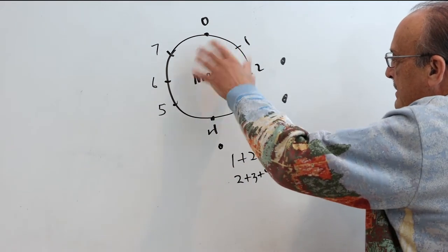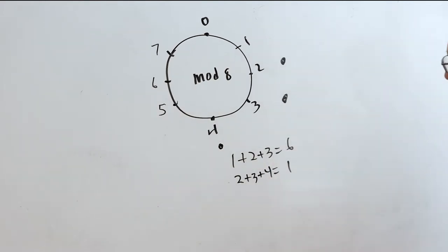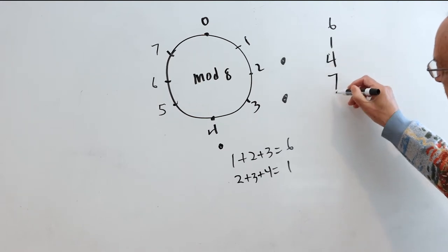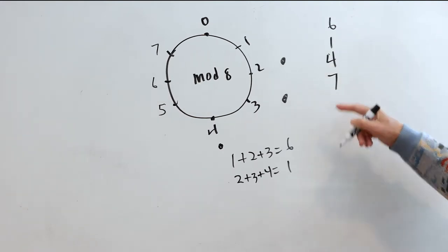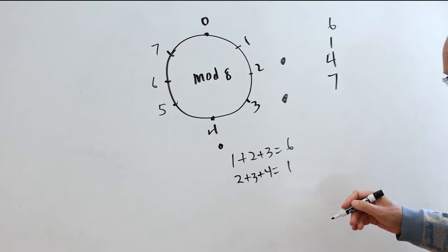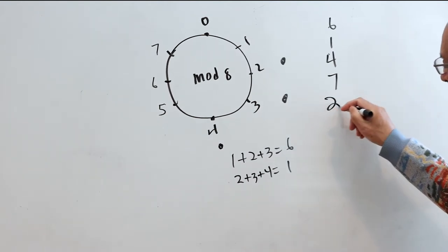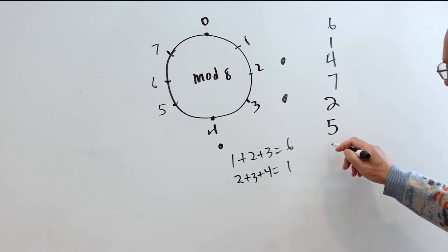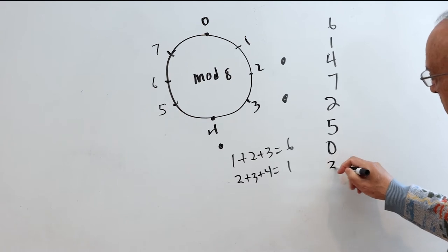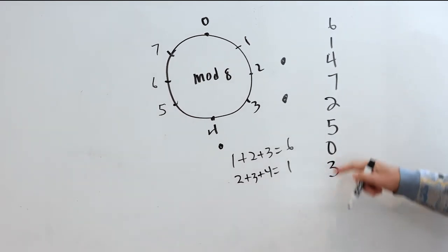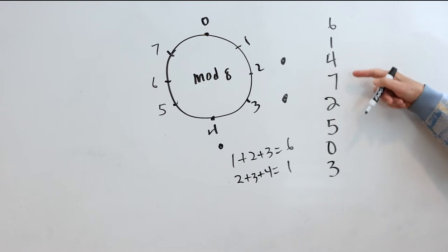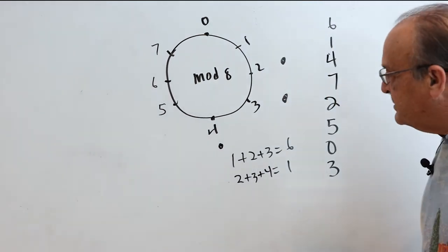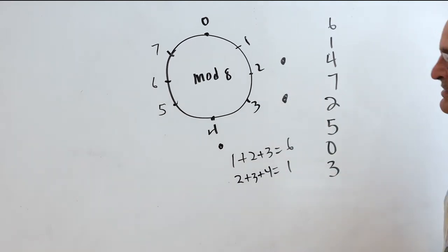And if I keep on dialing, I'm going to get 3 bigger again, and 3 bigger again, and 3 bigger again. Now on the clock, getting 3 bigger is the same as getting 5 smaller. So that could be 2, and then 3 bigger, and then 5 smaller, and 3 bigger. And notice I have now all the numbers 0, 1, 2, 3, 4, 5, 6, and 7 without any repeats. So that's true of this spacing, but actually it's true of any spacing.